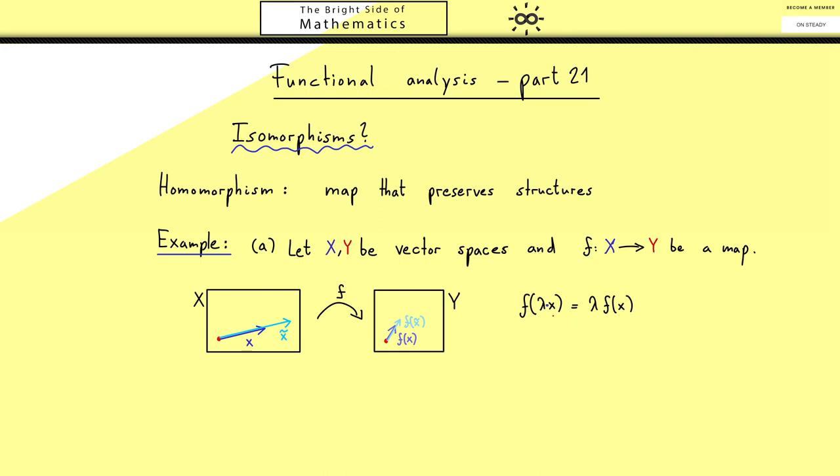Please note on the left hand side we have the scalar multiplication in X and on the right hand side we have the scalar multiplication in Y. Hence this preserving nature also includes some translating from left to right. Now in the same way as here, we also want to preserve the vector addition.